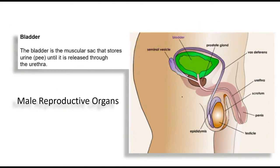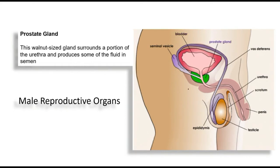Next is the bladder — it is a muscular sac that stores urine. That urine is released through a tube called the urethra. Next is the prostate gland. You can see the green color here — this is the prostate gland. It also produces a fluid called semen, which helps the movement of sperm.